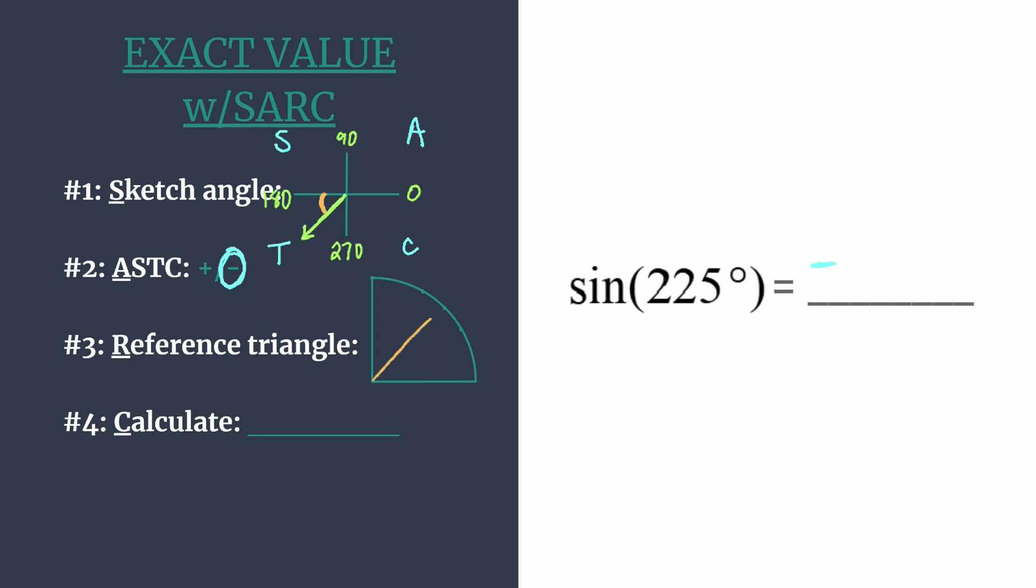That means we'll be getting our coordinates from our 45, 45, 90 special right triangle.